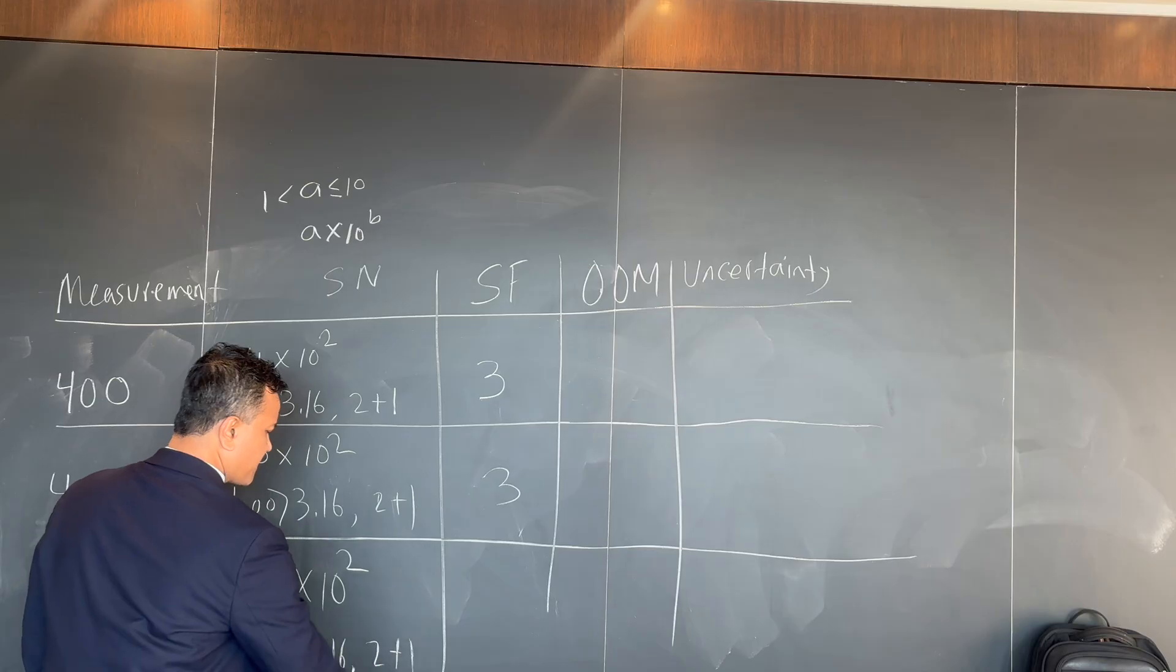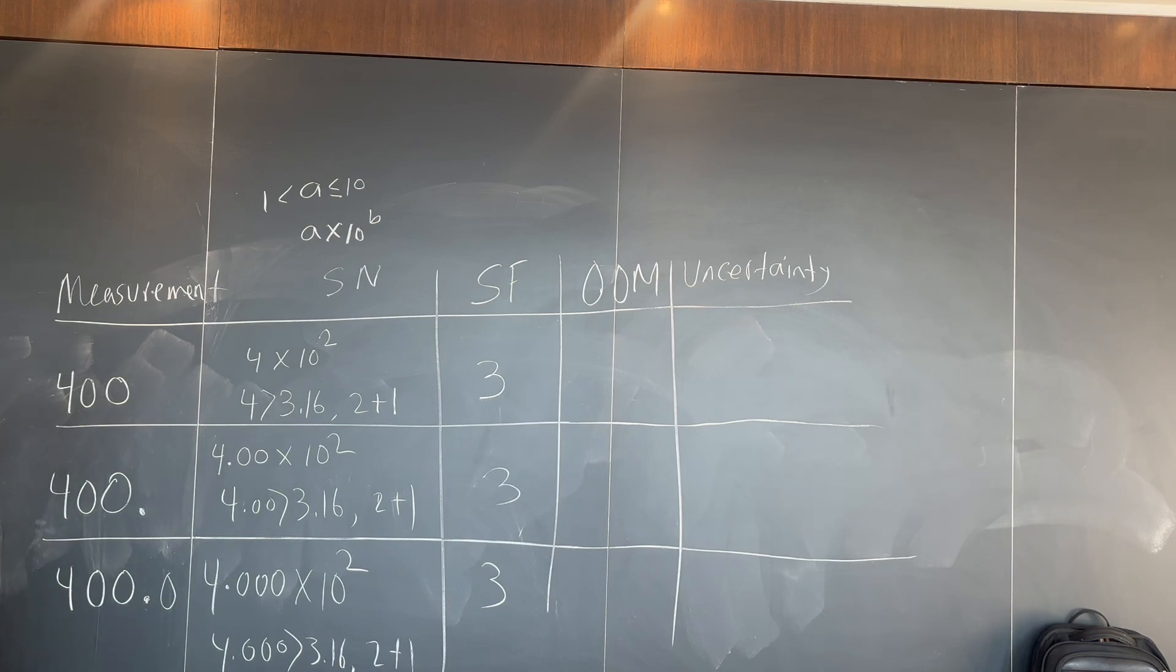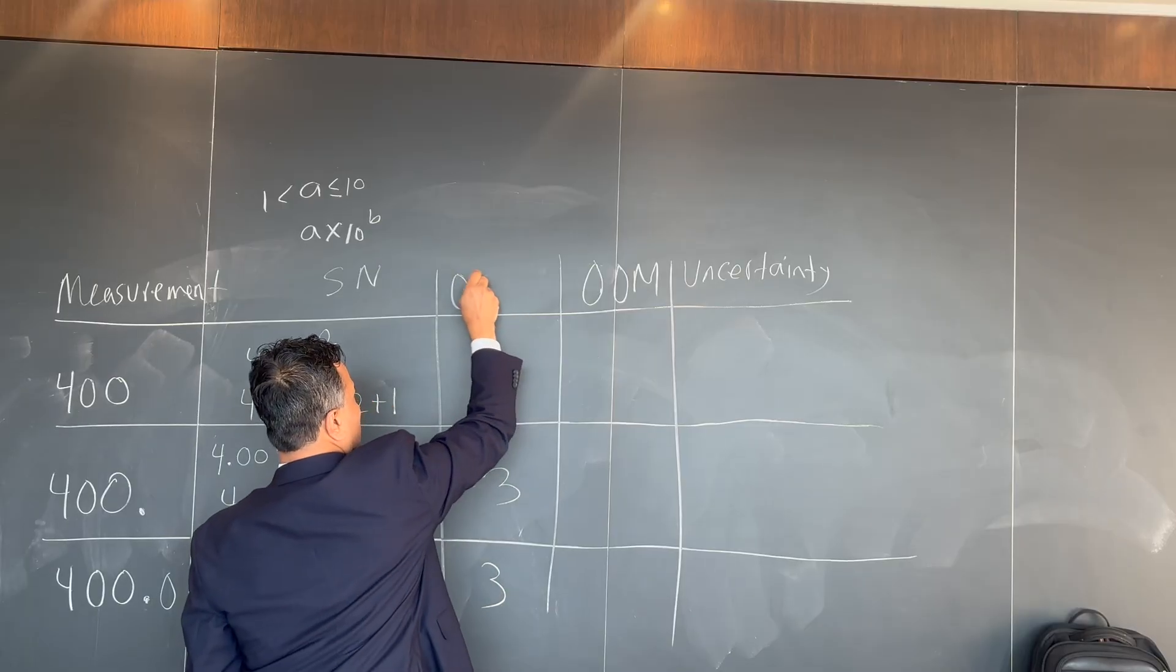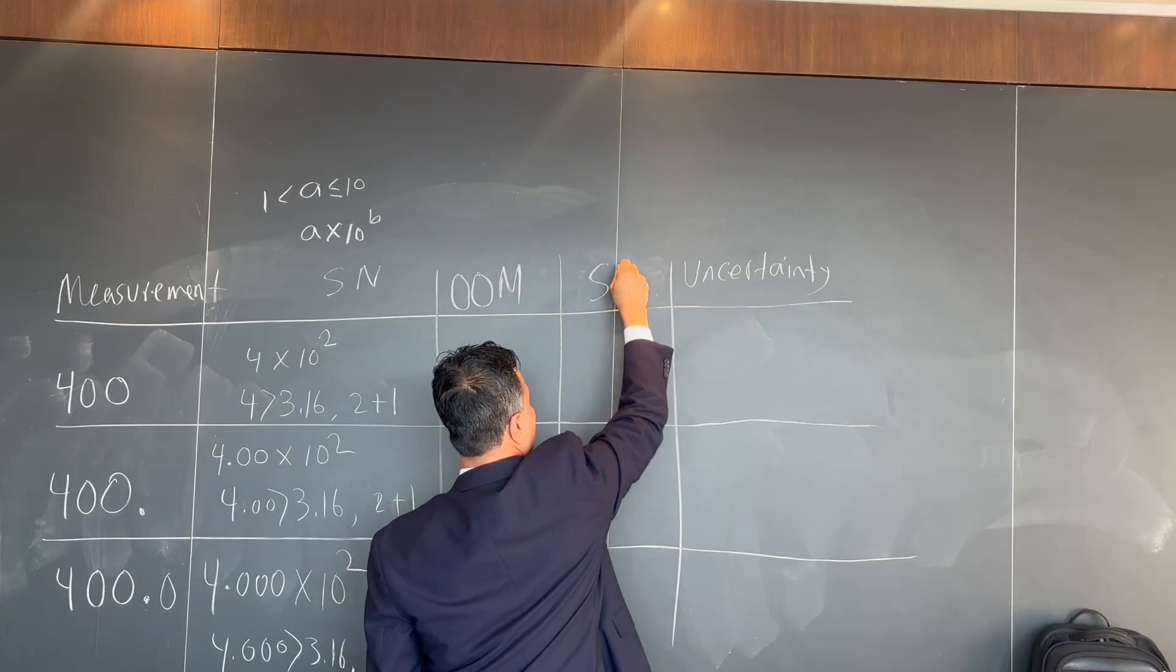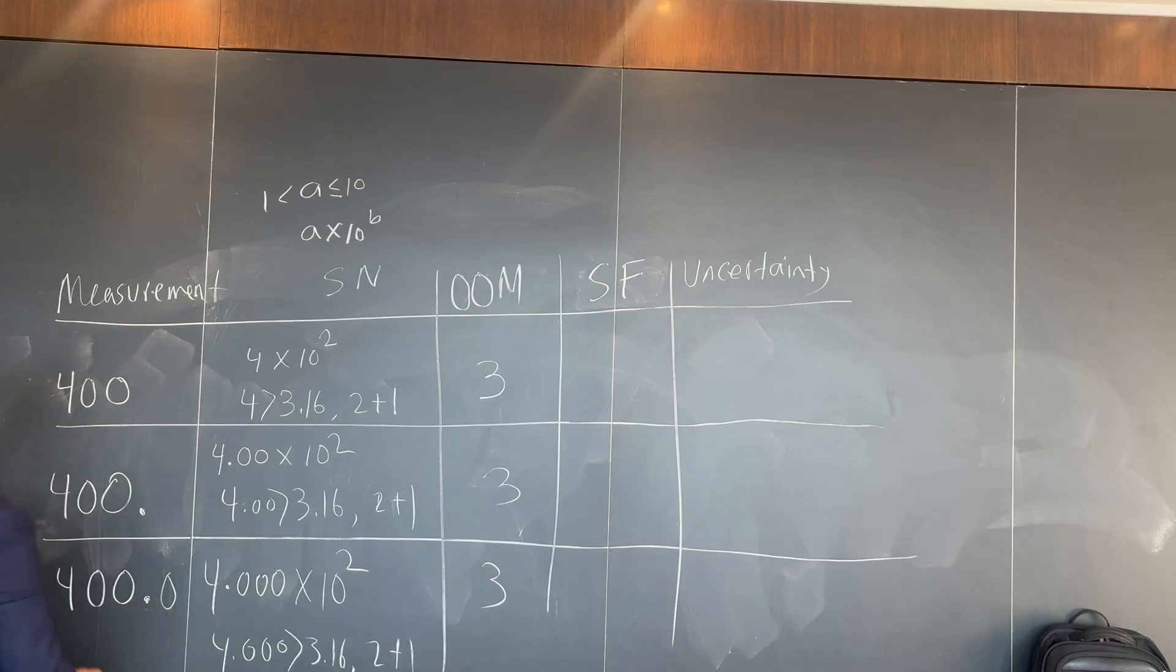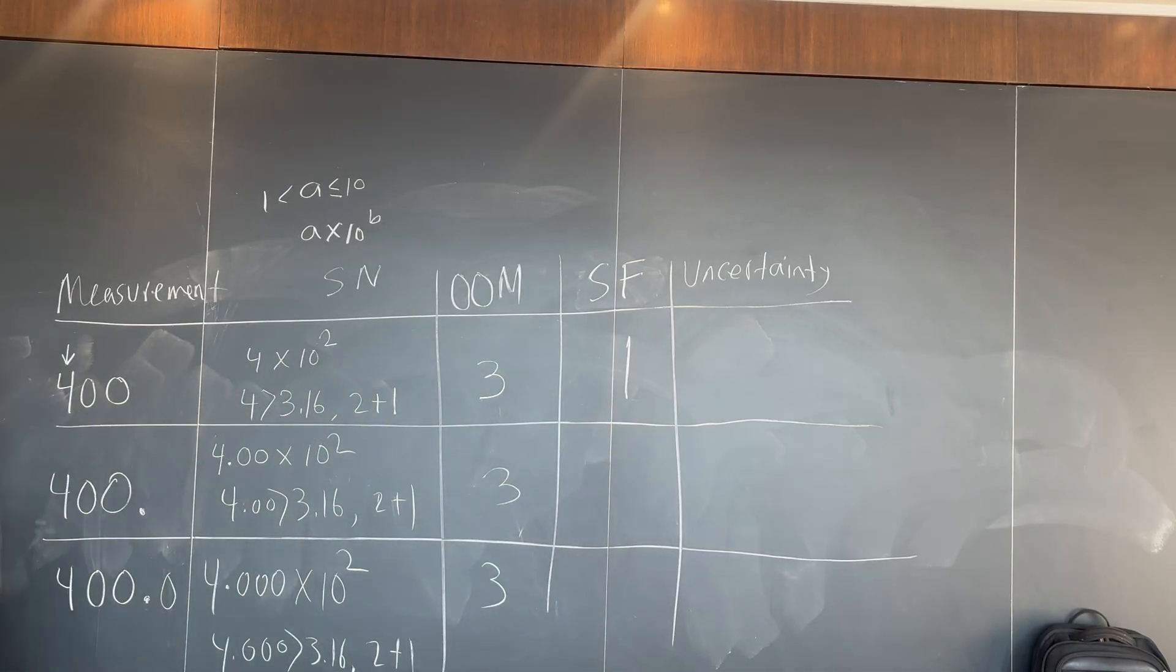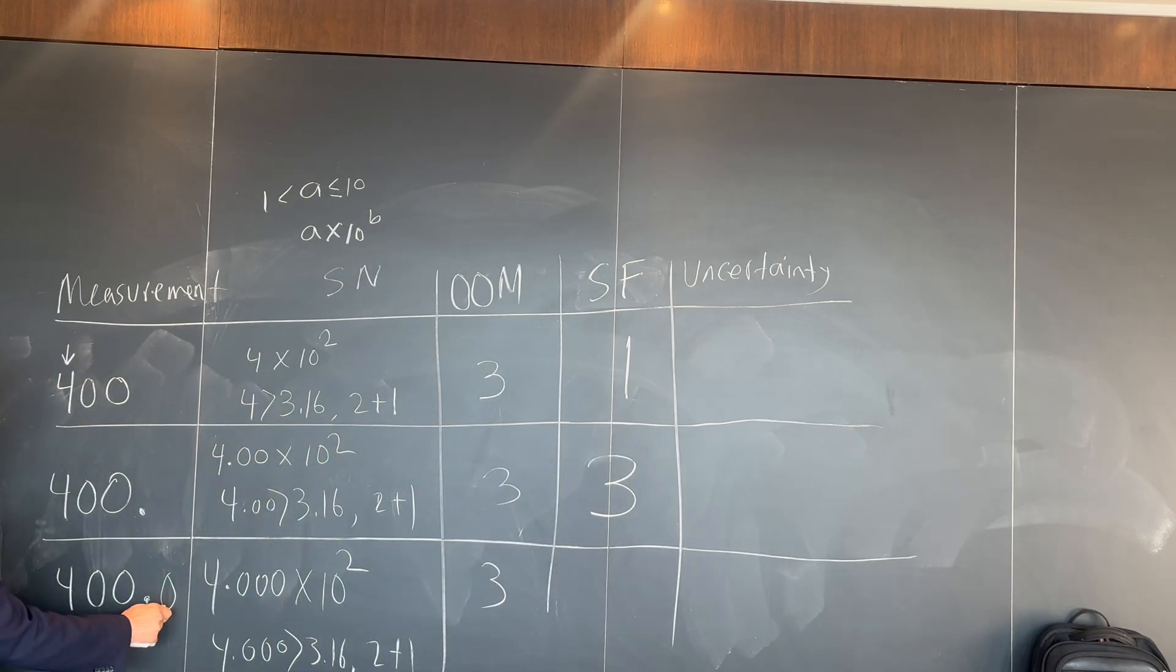Order of magnitude. This is order of magnitude. Now let's do the sig fig. Sig fig. There is only one sig fig because there is no decimal over here. This is only one sig fig. There is two sig fig because trailing zero is always a sig fig if there is a decimal. Trailing zero is always sig fig if there is a decimal, so four sig fig.